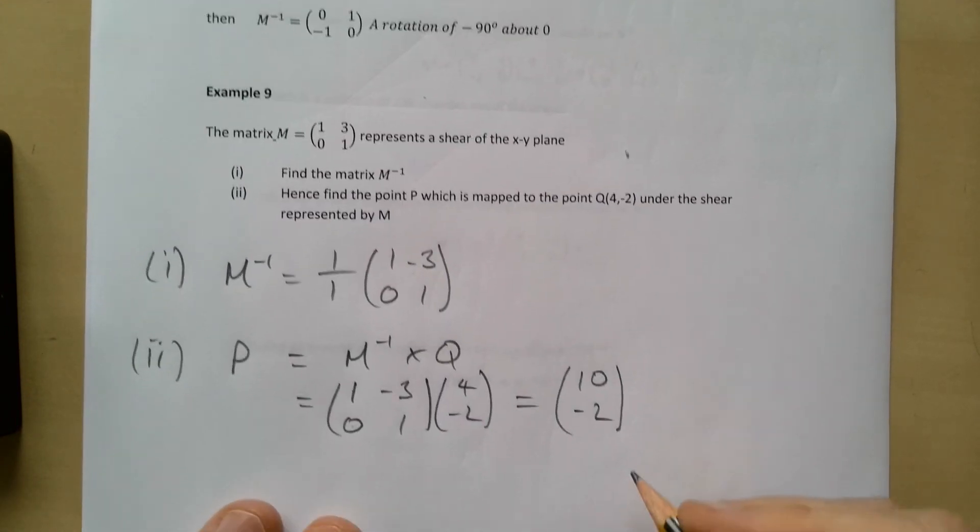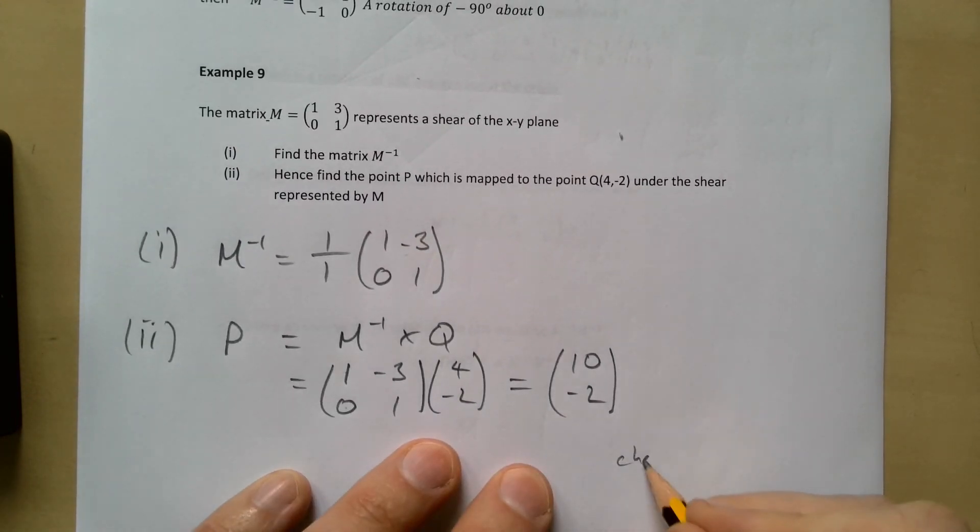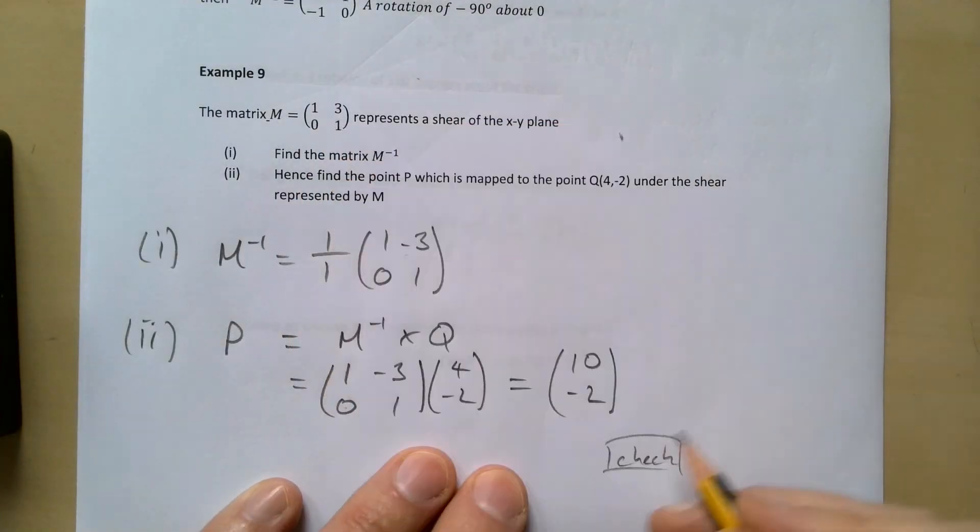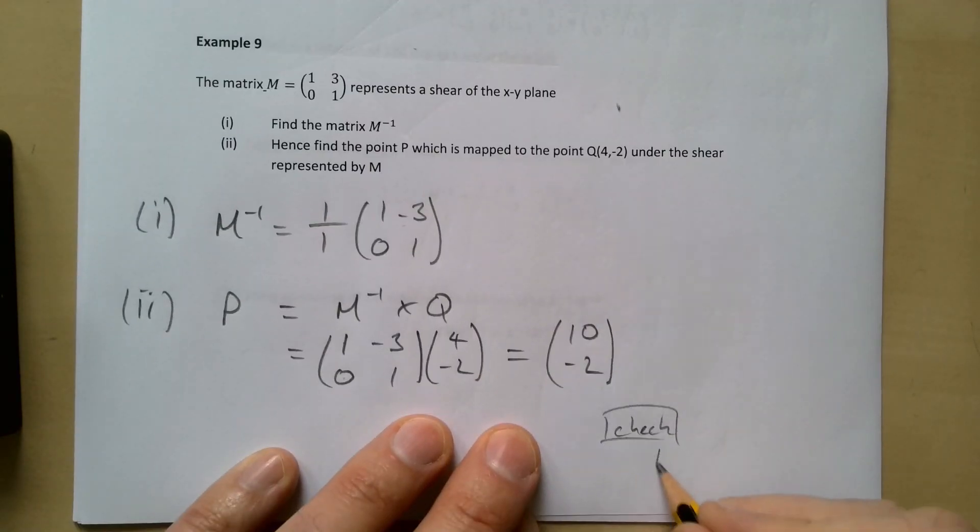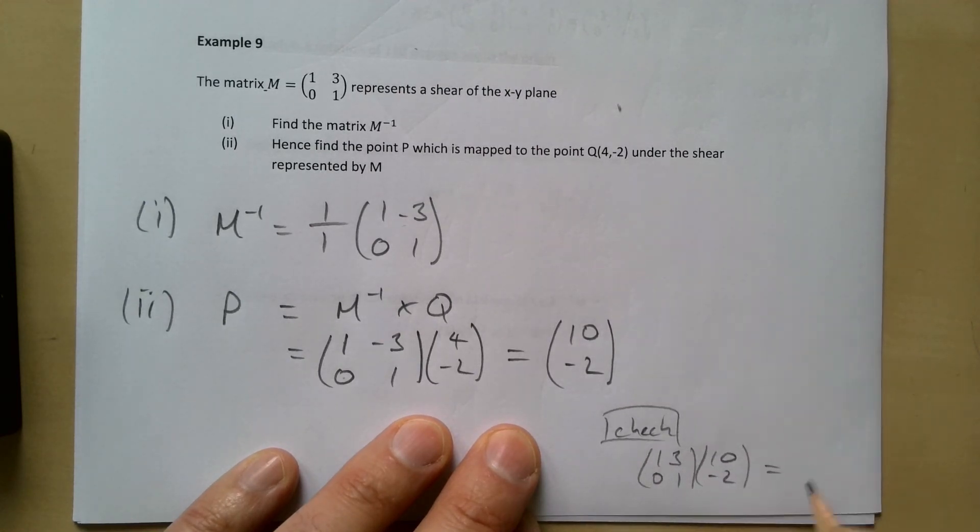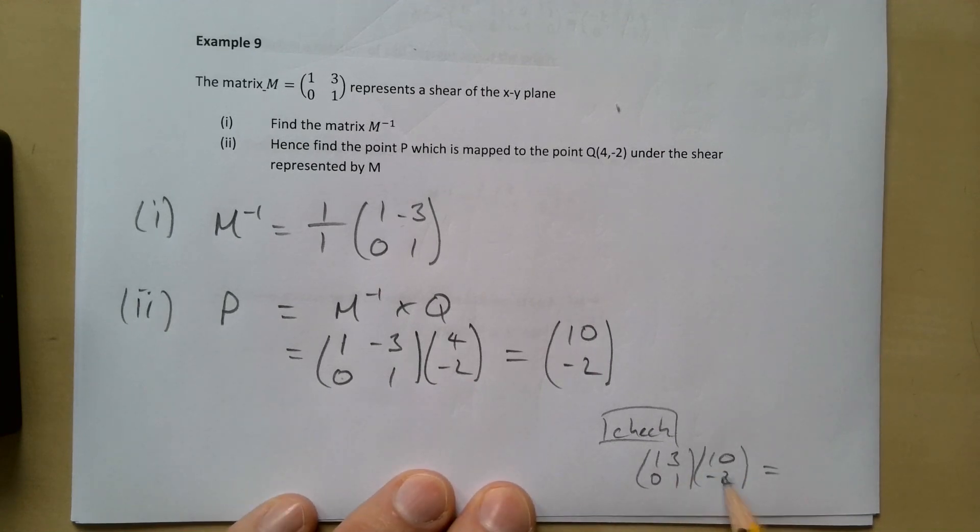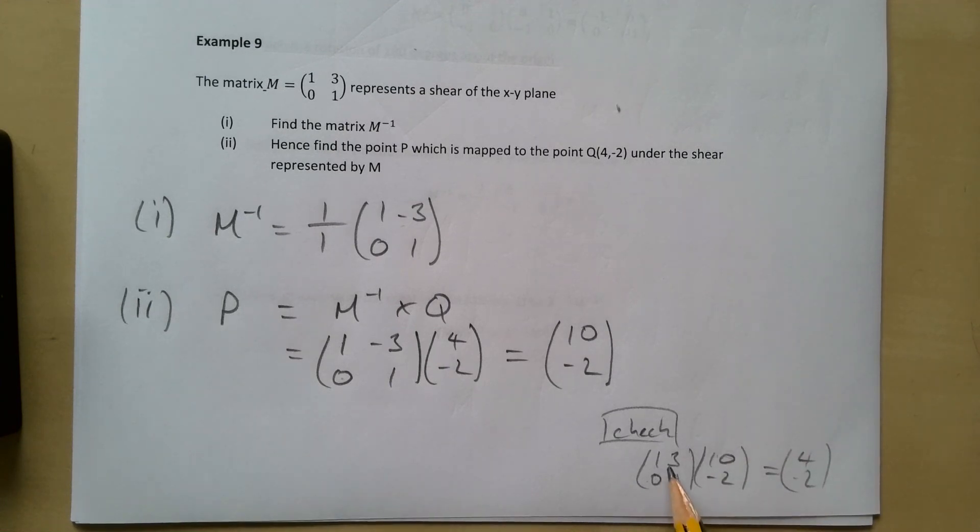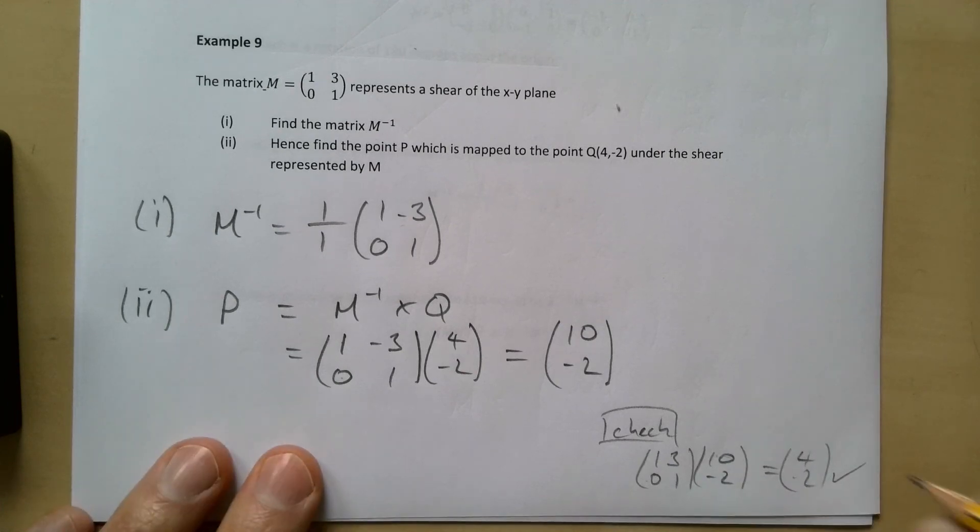We could do a wee check here. So let's check that whenever we send it originally through, [1 3; 0 1] times (10,-2). 10 take away 6 gives me 4, zero minus 2. Send the original matrix through the point (10,-2), so it looks like that it's going to work.